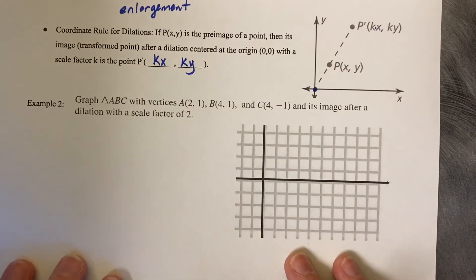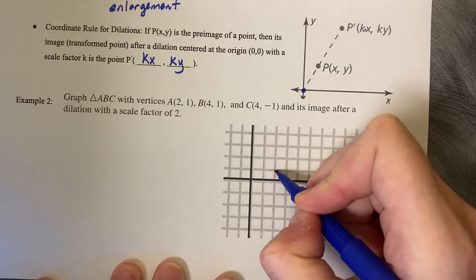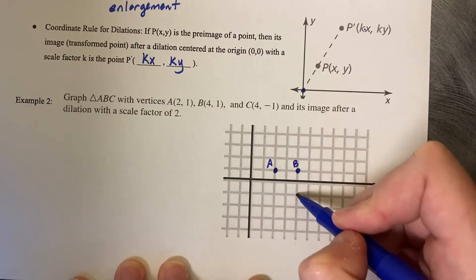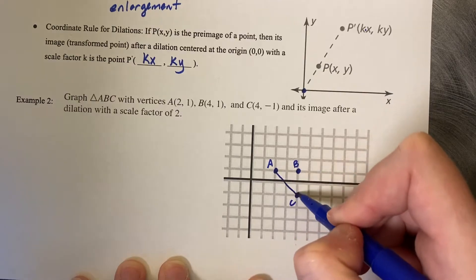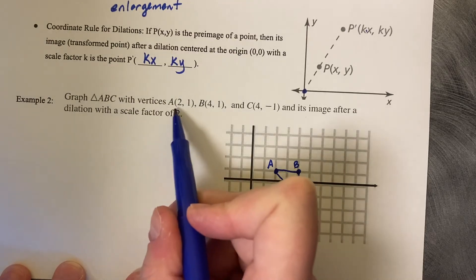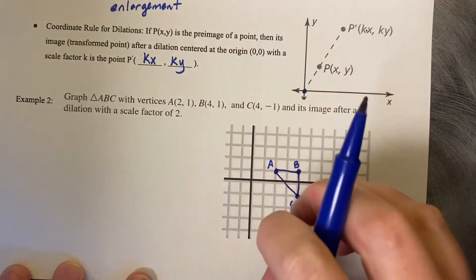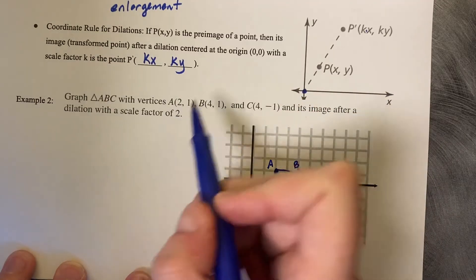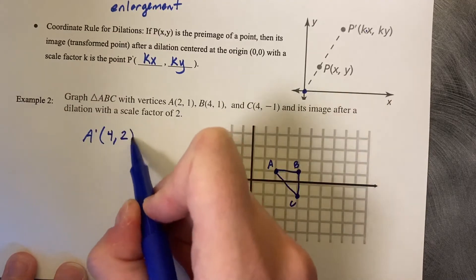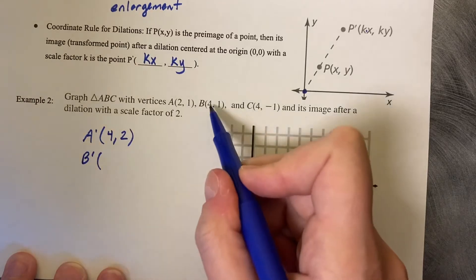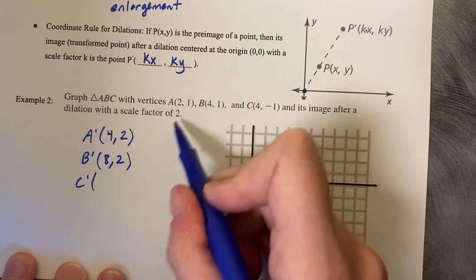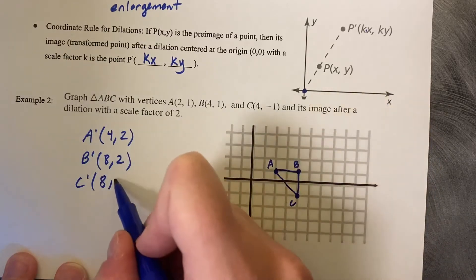Example 2: graph triangle ABC with vertices A(2, 1), B(4, 1), and C(4, -1), then graph the image after a dilation with scale factor 2. Since 2 is greater than 1, this is an enlargement. Multiply each coordinate by 2: A prime is (4, 2), B prime is (8, 2), and C prime is (8, -2).